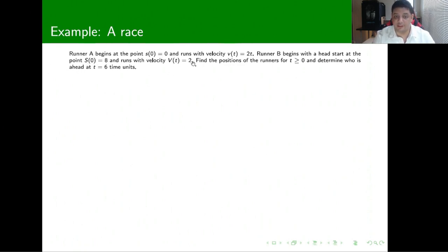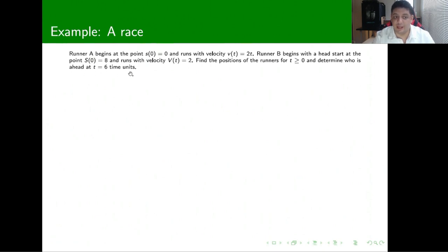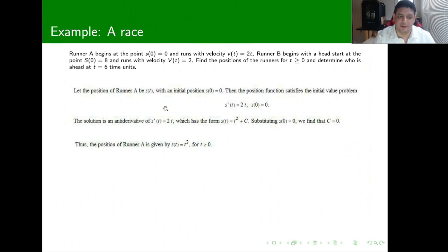Runner B runs with a constant velocity of 2 meters per second. We want to find the positions of the runners for t greater than 0 and determine who is ahead at a given time. Let's use meters per second as our units. For Runner A, since s of 0 equals 0, we set up the initial value problem: s prime of t equals 2t, with s of 0 equals 0.